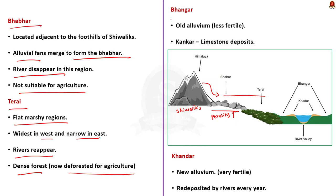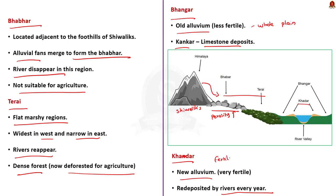Bhangar is the older alluvium along the riverbeds and extends over the whole Gangetic plain. It has kankar deposits, which are fragments of limestone. Finally, Khadar is composed of new alluvium and forms floodplains along the riverbanks. A new layer of alluvium is deposited by river floods almost every year, making Khadar the most fertile soils of the Ganges.